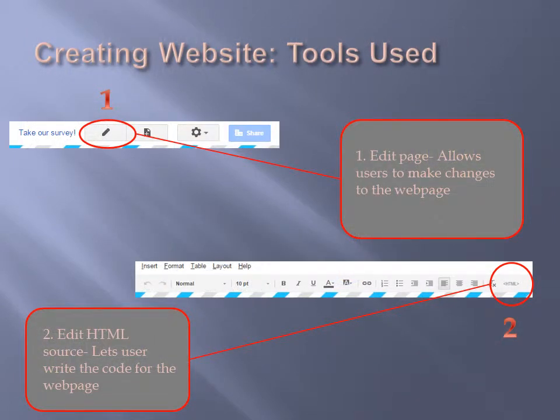We created our website by using the Google Sites Editor. We began with a simple and plain layout, and then created our own HTML code using the HTML button in the page editor, as seen in Figure 2. We chose to create our own HTML codes rather than choose a theme already provided by Google, because we wanted to challenge ourselves and have more control over the overall design.